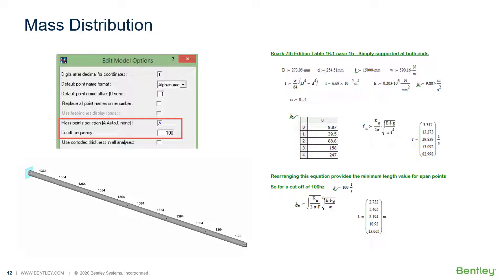Internally, the program adds 10 mass points between the nodes, dividing it into lengths of 1.364 meters or 4.475 feet, which is half of that calculated length.